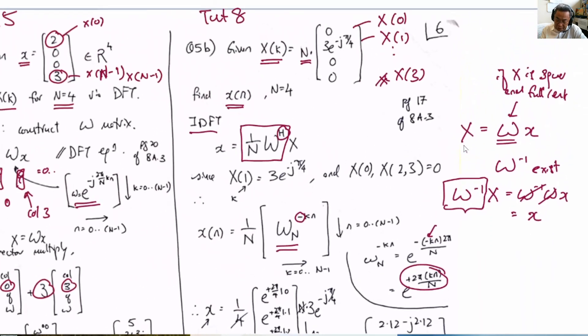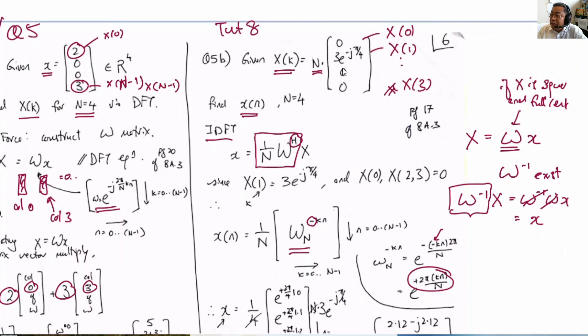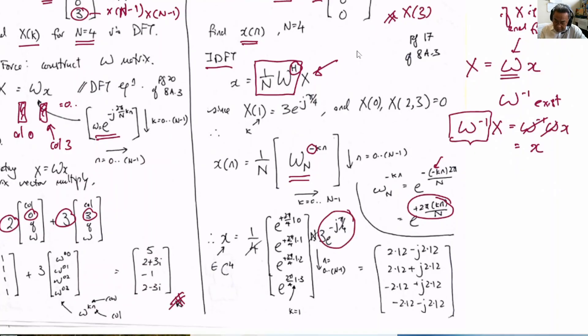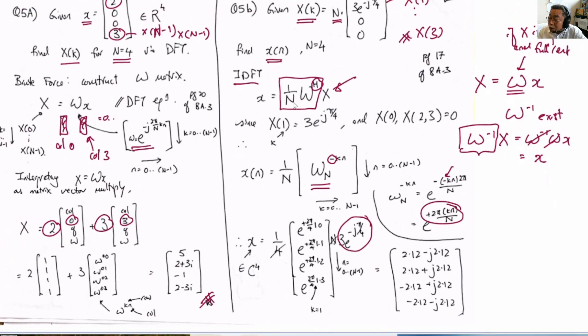Again, we will use the trick. The trick is this: most of the elements are zero, so we are only interested in column 1 of this matrix W^H, because matrix vector multiplication is simply the elements of X scaling the corresponding columns in W^H. We have 3e^(-jπ/4), which is this guy, multiplying by column 1 of this matrix W^H.